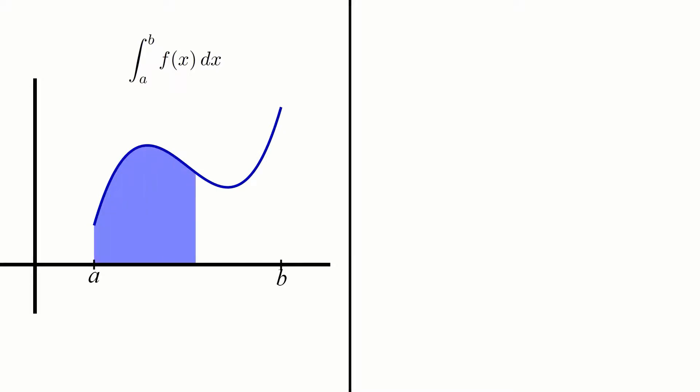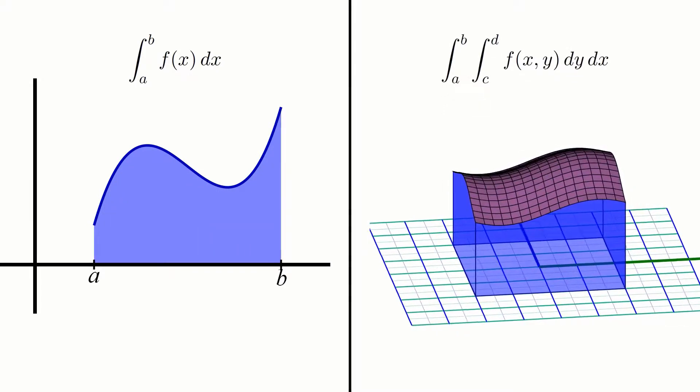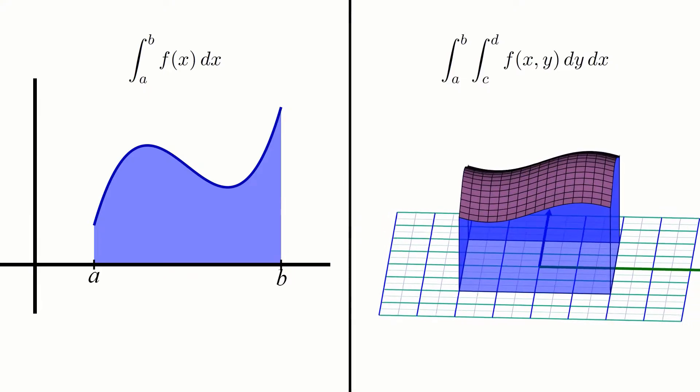That may sound kind of scary, but if you think about it, it might make some surface-level sense. If one integral gives you area, then it kind of makes sense that going up one dimension from area to volume would involve doing one more integral somehow.